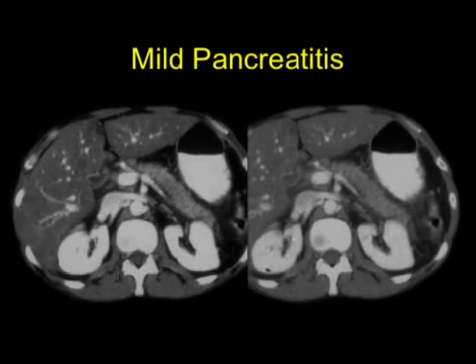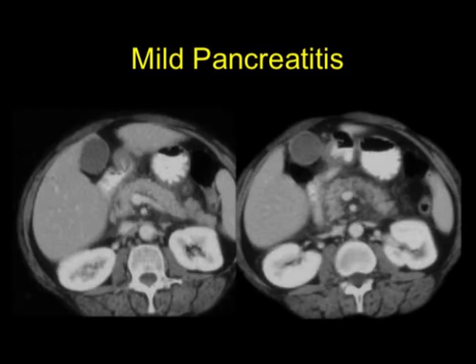When you look at pancreatitis, you go through a range of severity. Stranding around the gland — which I would consider mild pancreatitis — is very nicely shown with minimal stranding and mild glandular inflammation. You can see edematous changes in the gland, fluid around the gland, and fluid in the anterior pararenal spaces — right greater than left. But you can see that the entire gland enhances normally, indicating mild pancreatitis with no evidence of necrosis, which is a very critical finding.